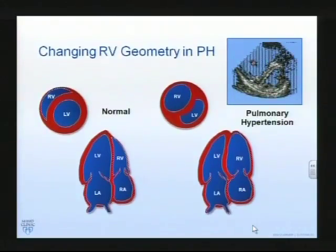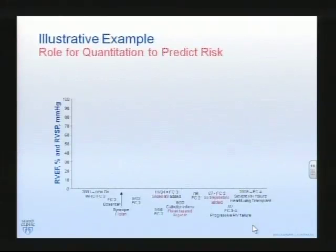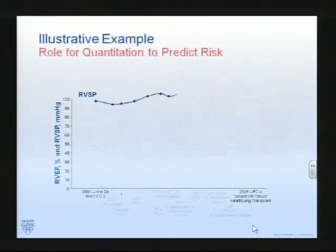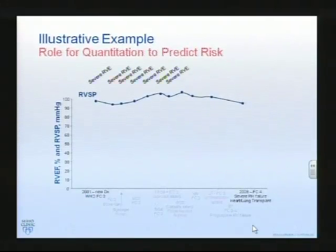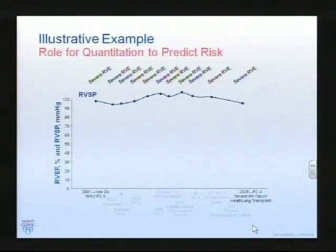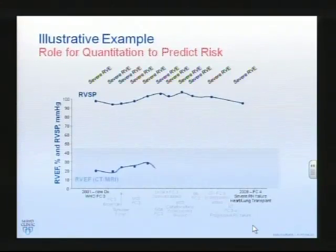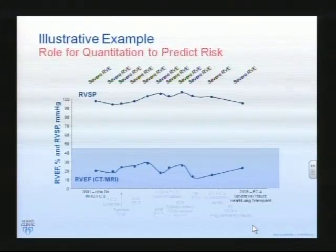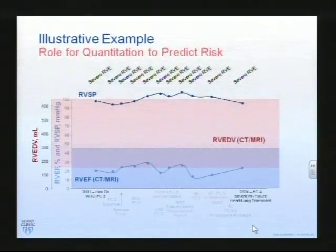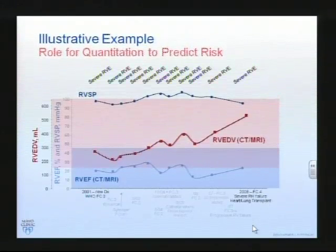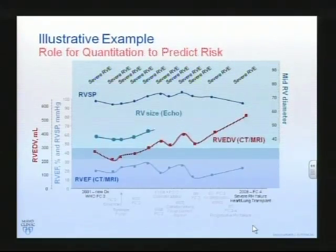Typically this is the normal biventricular view. With enlargement of the right ventricle you get compression of the left ventricle. The question is which of these measurements is best able to predict risk. As just one example of a patient with severe right ventricular enlargement throughout: this was the course of the right ventricular systolic pressure assessed by ECHO; this was the right ventricular ejection fraction assessed by CT and MRI; and this is the right ventricular end diastolic volume assessed by CT and MRI, which we've tended to find much more helpful than right ventricular ejection fraction.